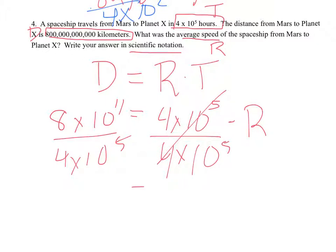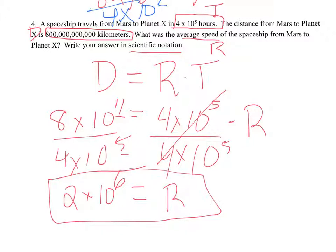These cancel out, leaving R equals 8 divided by 4, which is 2, times 10 to the... we have 11 minus 5 (subtracting exponents when dividing), so 10 to the 6th. That's our final answer.